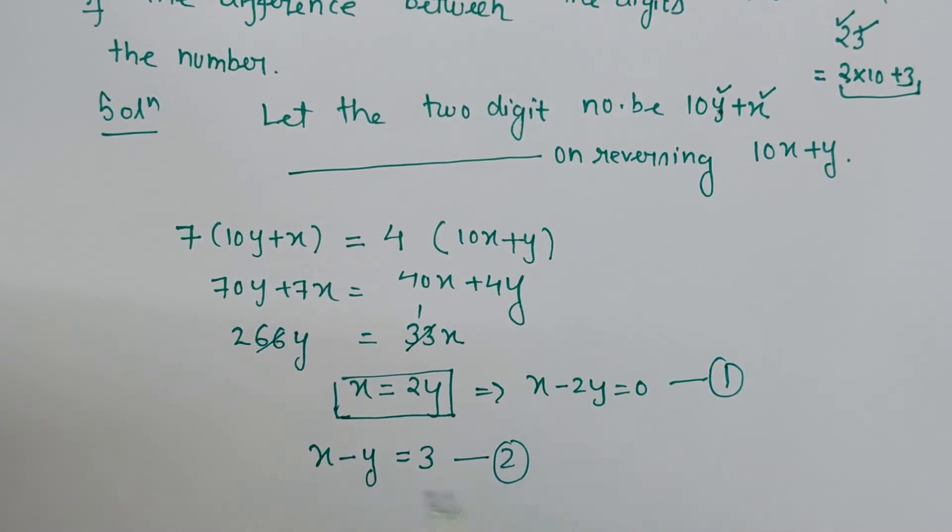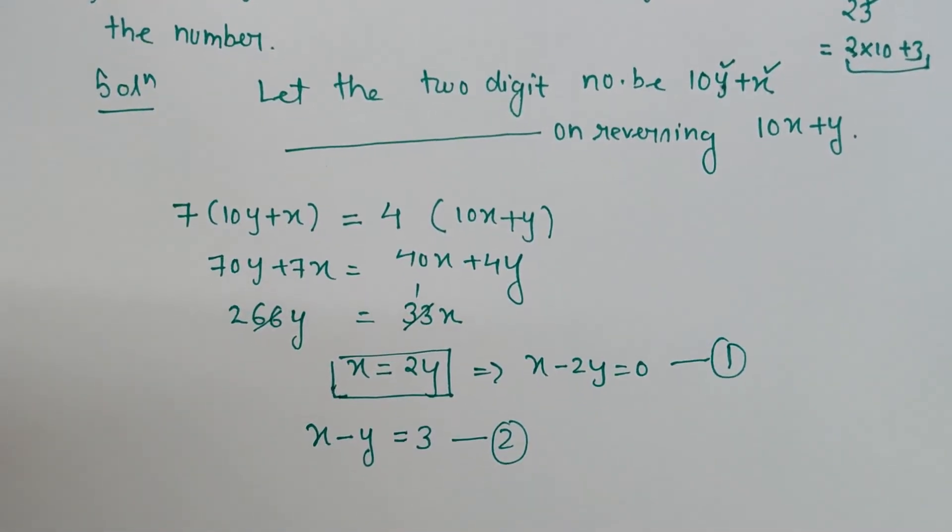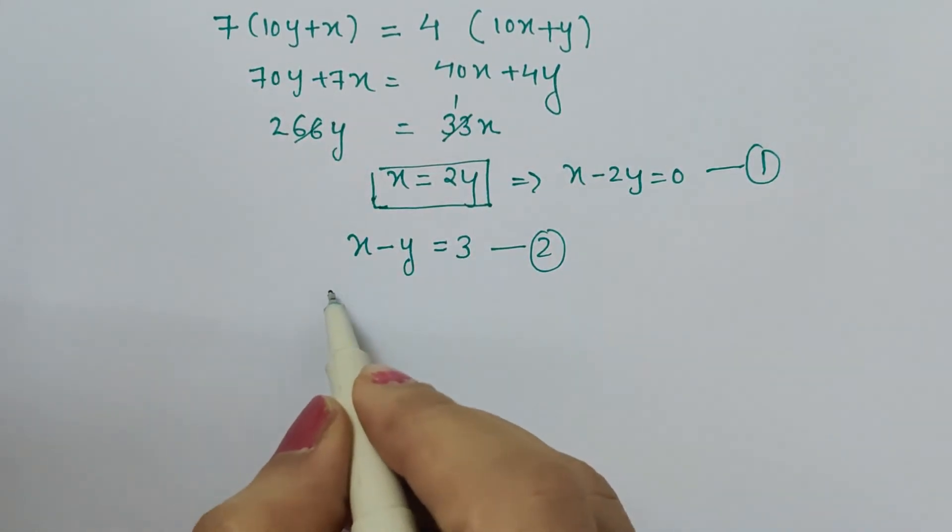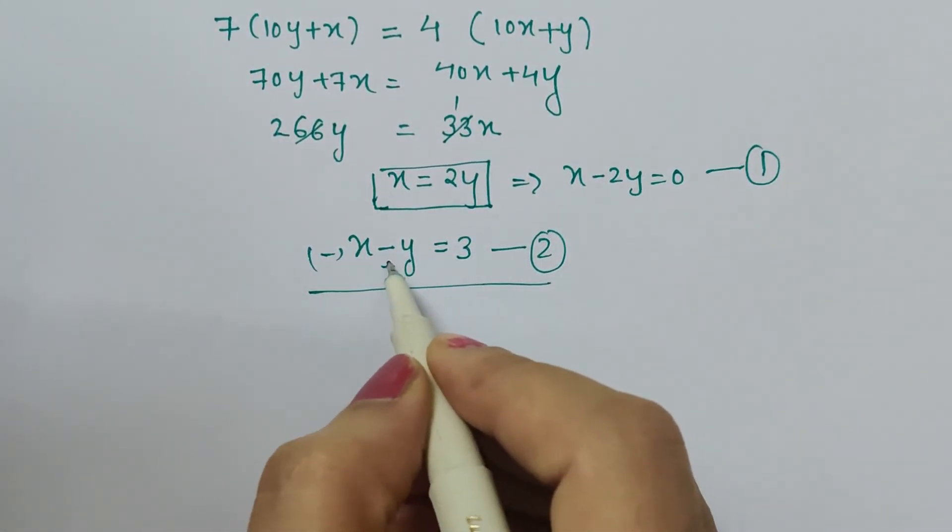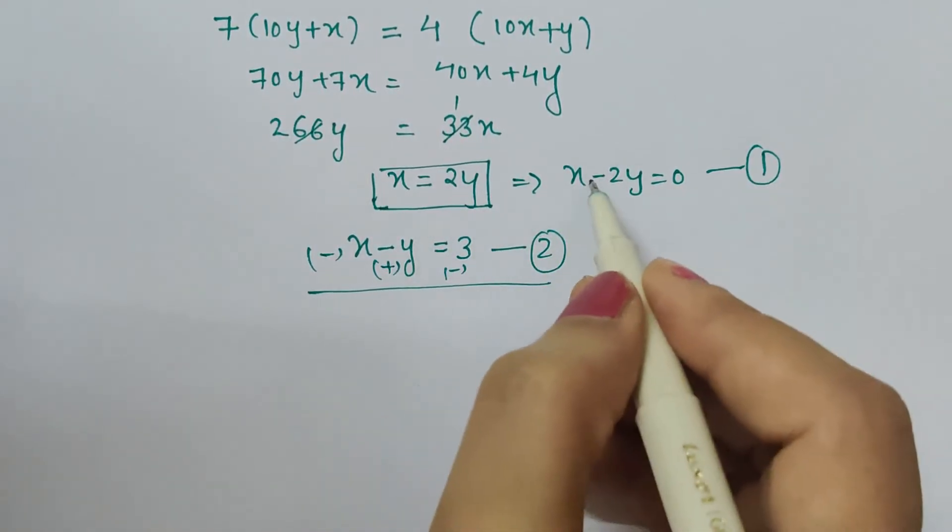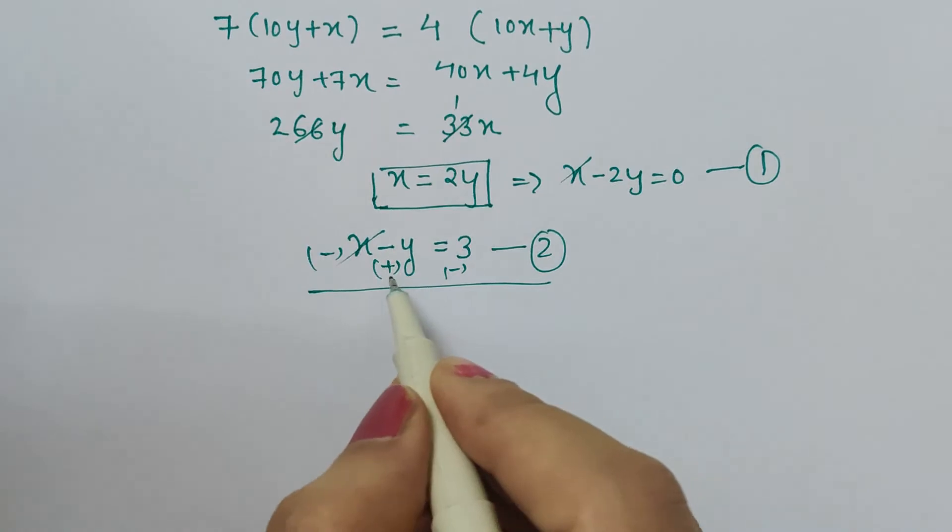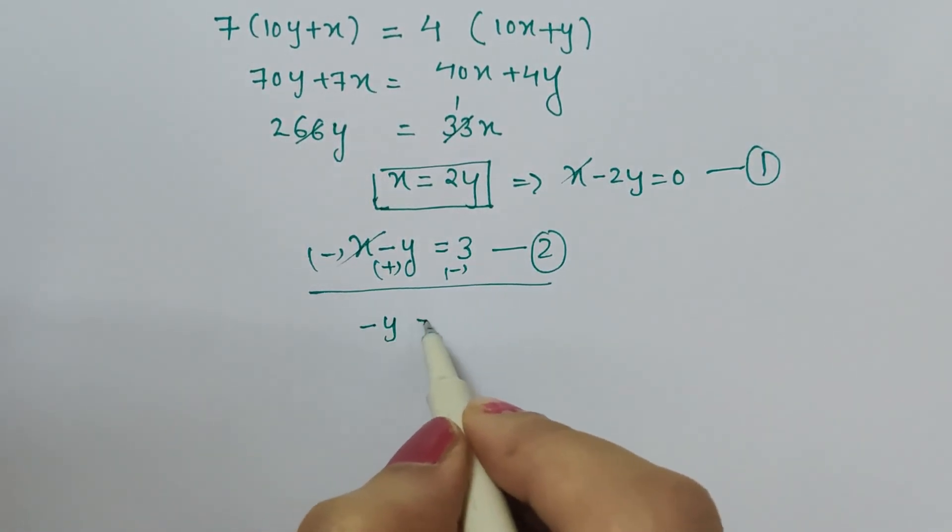Now let's solve it further. We can apply elimination method. Just change the sign of the other equation. So here x minus x gets cancelled, minus 2y and plus y gives minus y, and here we have minus 3. So y value is 3.